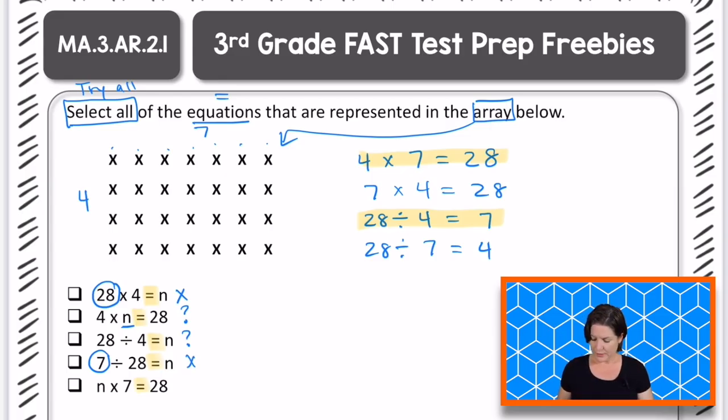And then the final one, n times 7 equals 28. So n here, the value would be 4. Do we have something that says 4 times 7 equals 28? Yeah, right up here, right? We've already marked that one. So we can go ahead and keep that one. Now we've done all the work. We have 3 answer choices that we have kept.